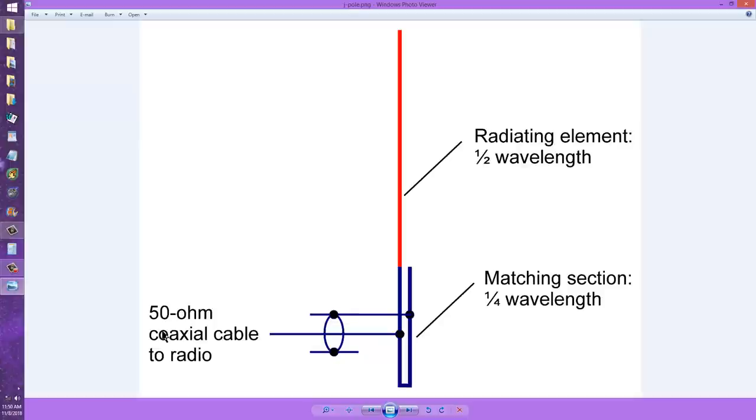Once you've done that, you have the complete antenna. The radio goes into 50-ohm coaxial cable and sees a purely resistive impedance of 50 ohms, feeds to this matching section, which in turn provides the necessary radio frequency signal to the end of this radiating element so that it will radiate into space.